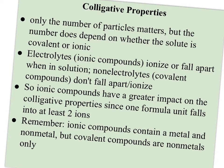Colligative properties only depend on the number of particles, but there's a caveat: the number of particles depends on whether the solute is covalent or ionic. Ionic compounds — called electrolytes in solution — ionize and fall apart into positive and negative ions, becoming good conductors. Non-electrolytes, or covalent compounds, don't fall apart and don't form ions. So ionic compounds have a greater impact since one formula unit splits into at least two ions.